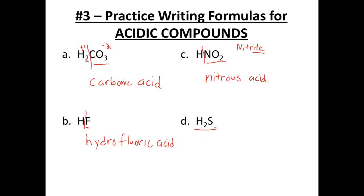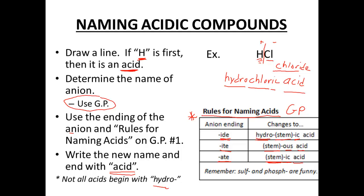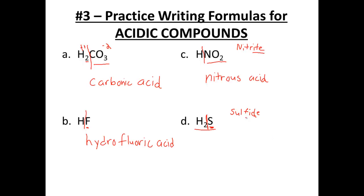H₂S begins with H, so we know it's an acid. Sulfur, or sulfide, is our anion. If it ends in sulfide — which ends in -IDE — we'd normally go with hydro + stem + -IC. But there's a special note at the bottom: sulfur and phosphorus are kind of funny. With sulfur and phosphorus, we actually use the whole name instead of just the stem. So for sulfide, we get hydrosulfuric acid.